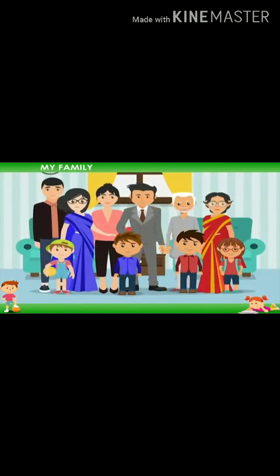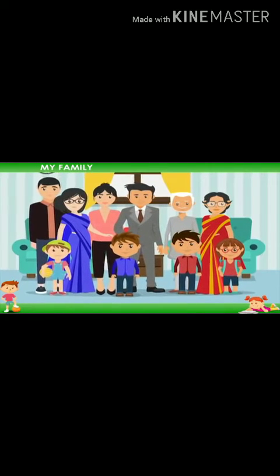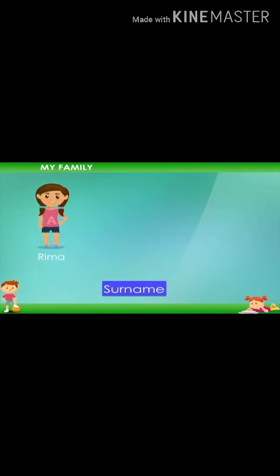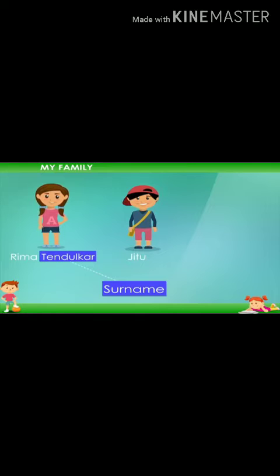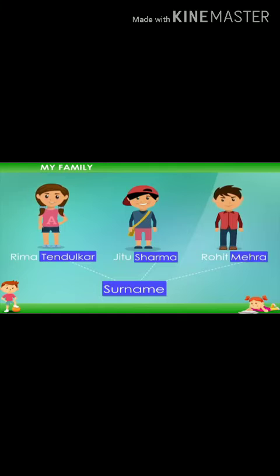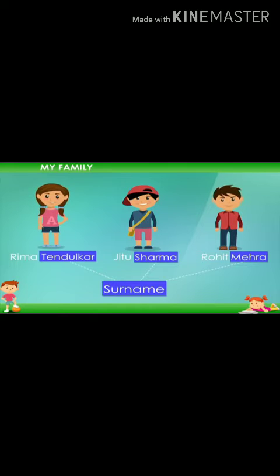Members of a family have a common family name. My family name is Tendulkar. Jitu's family name is Sharma, and Rohit's family name is Mehra. This common family name is called a surname. The surname follows the first name of each family member.